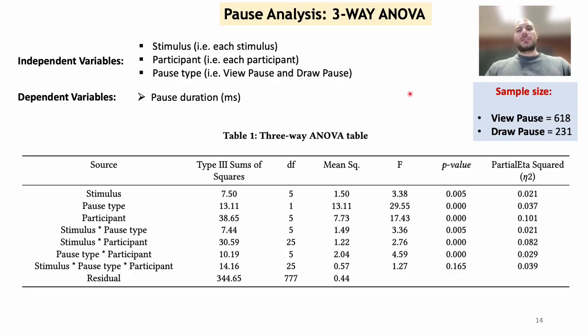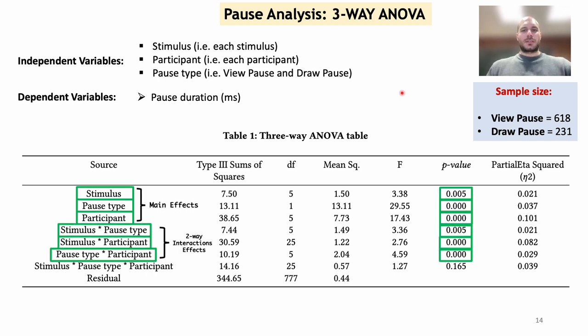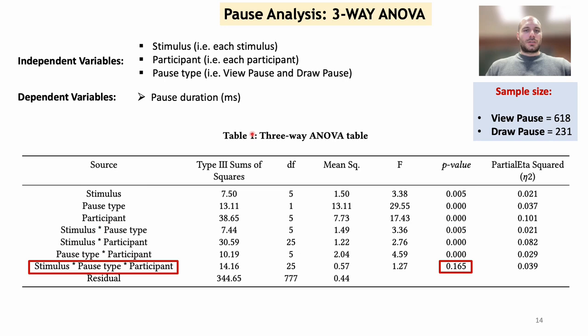In order to explain the differences in pause duration, we also conducted an analysis of variance using a three-way ANOVA. The statistically significant main effects and the two-way interaction effect revealed that both individual factors and their interactions were able to explain the pause duration. Only the three-way interaction effect wasn't significant.